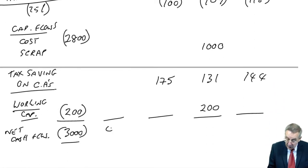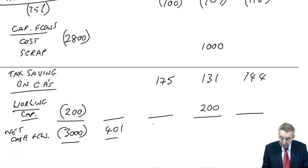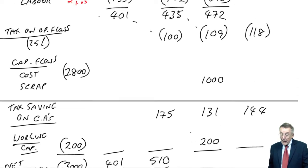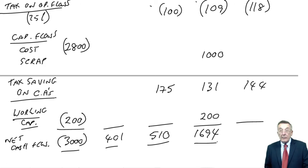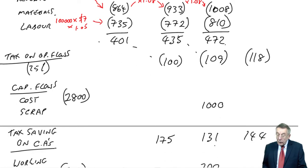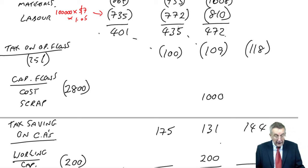I can add up and get the net cash flow each year and then discount in the normal way at 10%. And in fact, it might be an idea if you just had a race with me because I shouldn't really need to be talking through this bit. But the net cash flow at time zero is 3000 outflow. At time one, an inflow of 401. At time two, 435 minus 100 plus 175 is 510. At time three, 472 minus 109 plus 1000, 131 and 200. I think 1694. And finally, at time four, 144 inflow, 118 outflow. An inflow of 26.